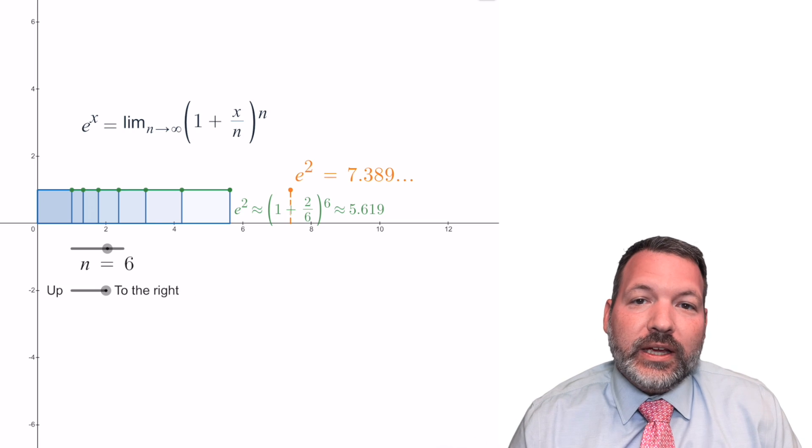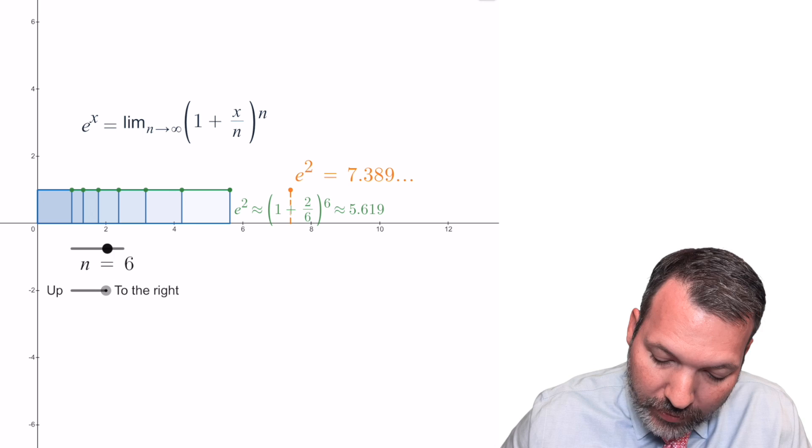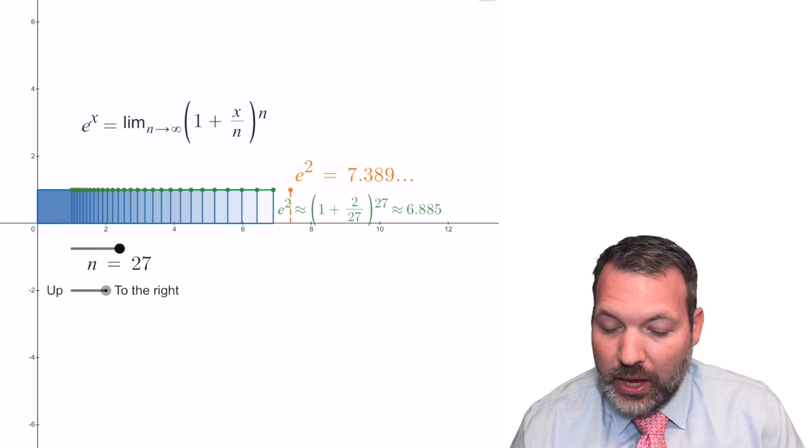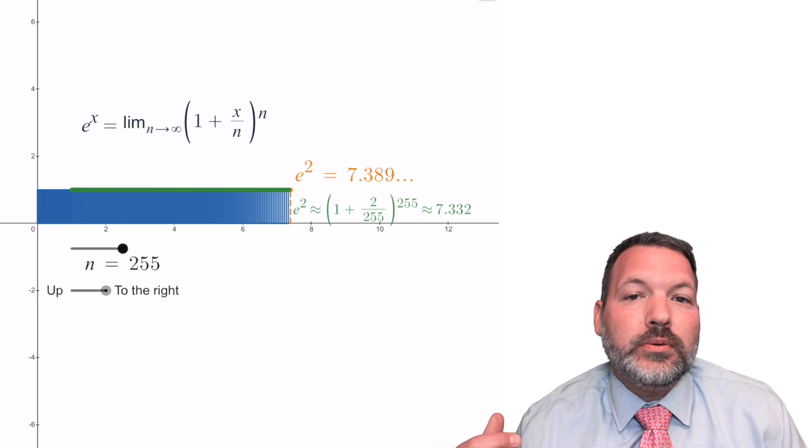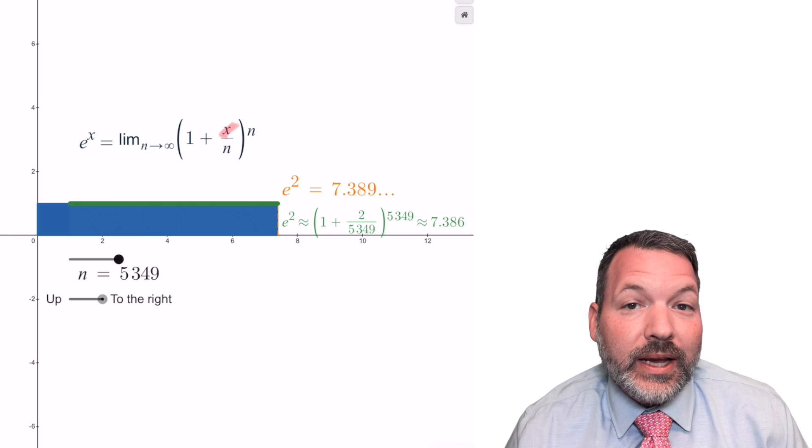If we let the thing we're dividing into smaller and smaller parts be 2, as I've changed it to here, then as we increase the number of parts, you can see we get closer and closer to 7.389, etc, etc. That is, we get closer and closer to e squared.